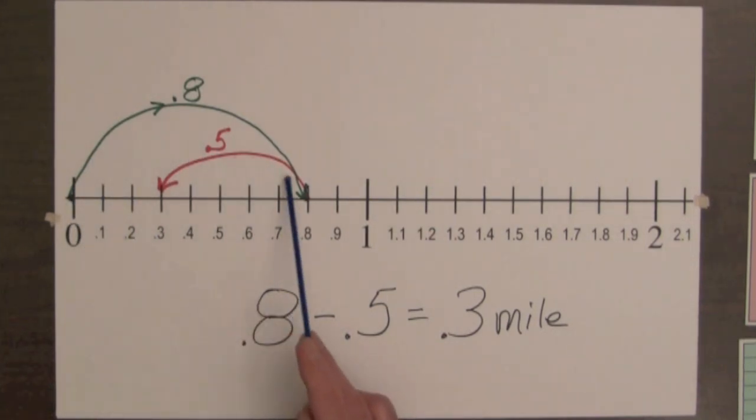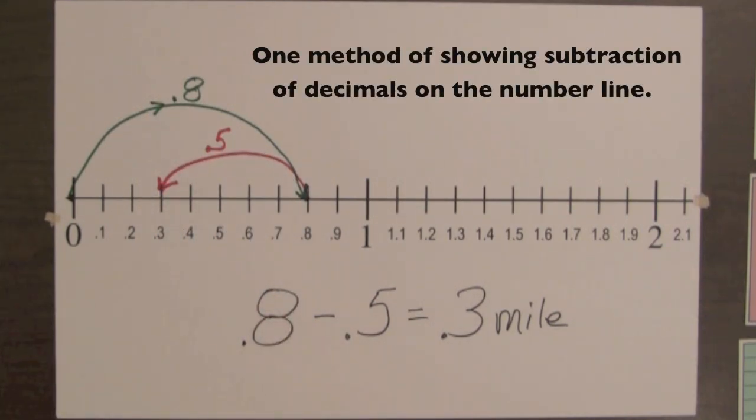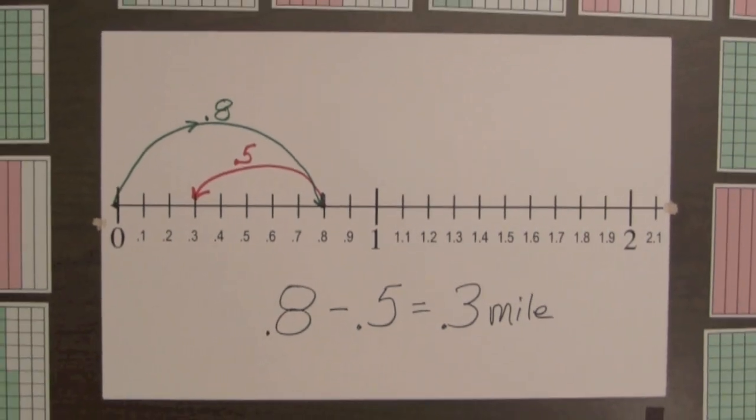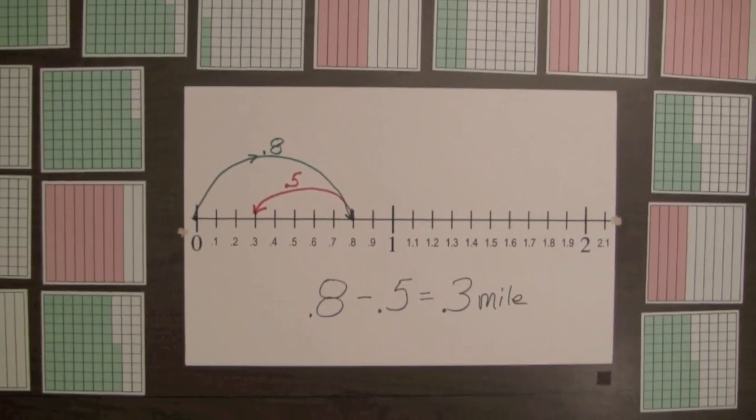Moving forward on a number line to represent one amount, and then moving back towards 0 to represent a second amount, is one method of showing subtraction of decimals on the number line. Next we look at a different method of showing subtraction of decimals on a number line.